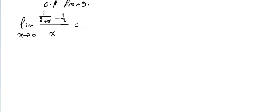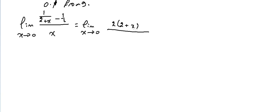First, I have to make this as one fraction. So let me take common denominator. The common denominator is 2 multiplied with (2+x), all over x.